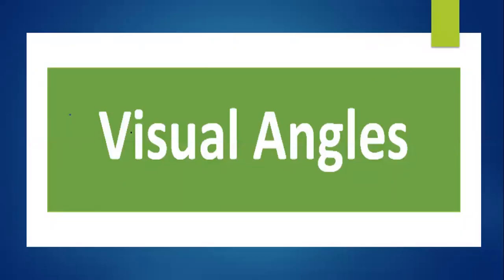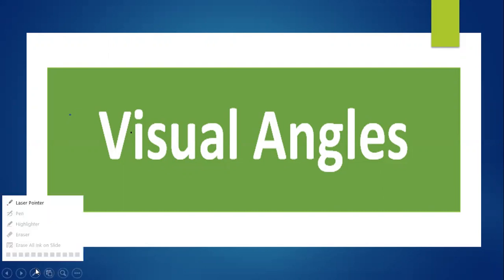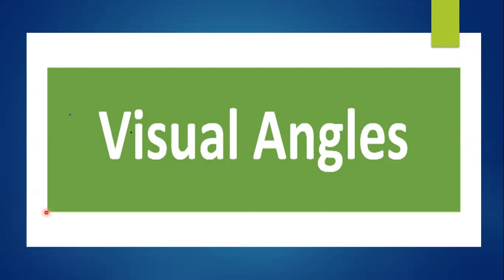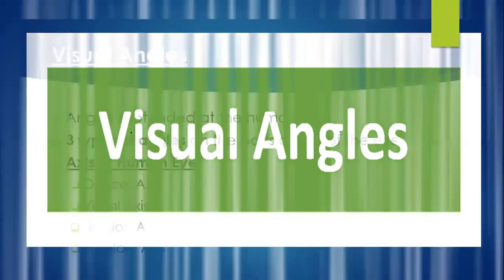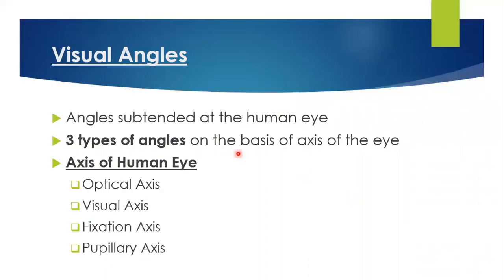Hello everyone, hope you are all doing well. Today we are going to discuss about real angles, because it is also an important part to understand the real angles or the angles present in the eye. So let's move on. What are real angles? These are the angles subtended at the human eye. There are three types of angles on the basis of the axis of the eye.